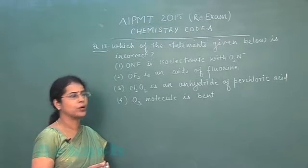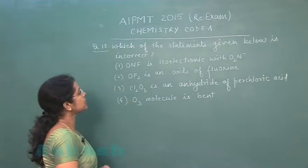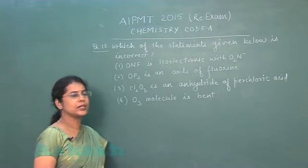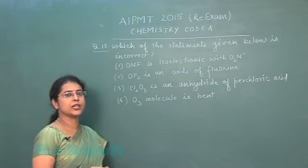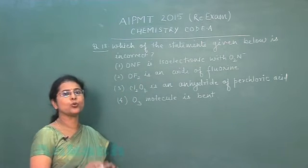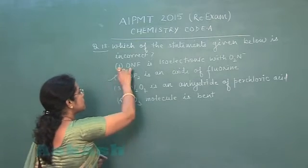Second option is OF2 is an oxide of fluorine. This statement is incorrect. This binary compound is known as fluoride of oxygen. So this option is incorrect.